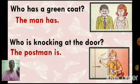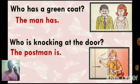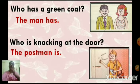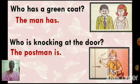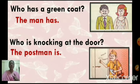So the first question: who has a green coat? We answered: the man has — because in the question the word has was used. Second question: who is knocking at the door? We answered: the postman is — because in the question it is is, so the answer also uses is. The postman is.